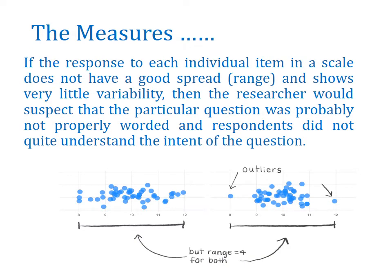The measures also give information about each individual item in a scale. If an individual item in a scale does not have a good spread in mean and range, and shows very little variability, then the researcher would suspect that the particular question was probably not properly worded and the respondent did not quite understand the intent of the question. This highlights the importance of questionnaire development and item wording, which we have already discussed in previous modules.